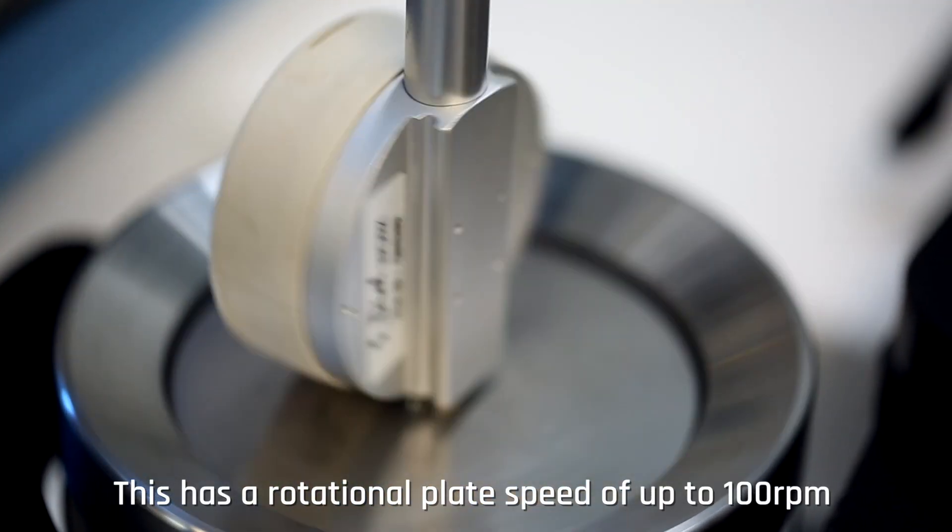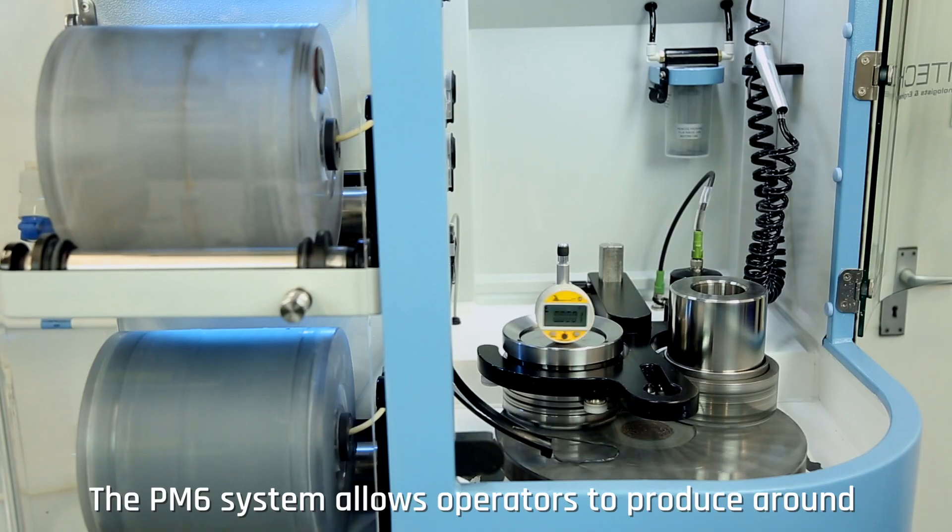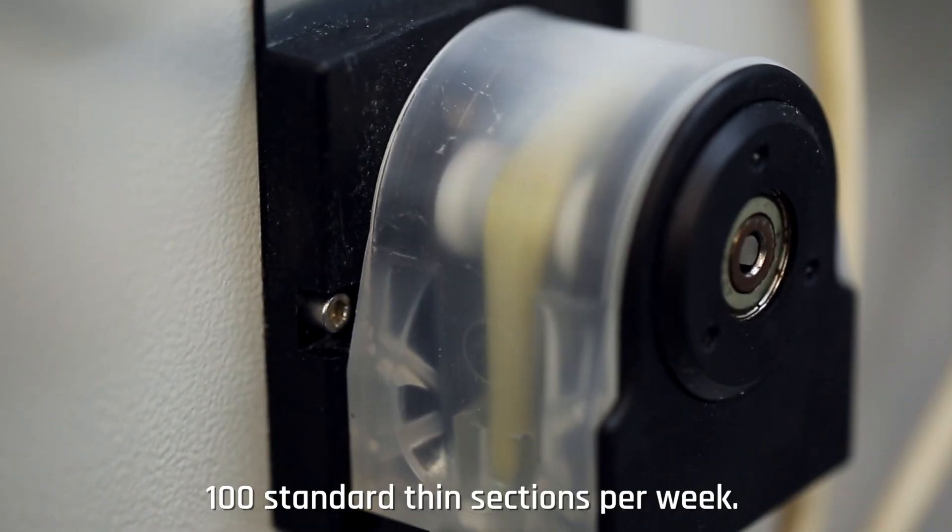This has a rotational plate speed of up to 100 RPM with the aid of an abrasive slurry. The PM6 system allows operators to produce around 100 standard thin sections per week.